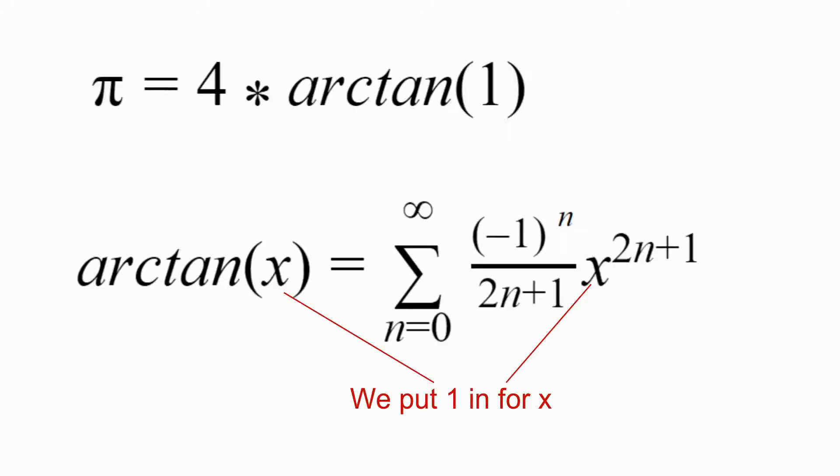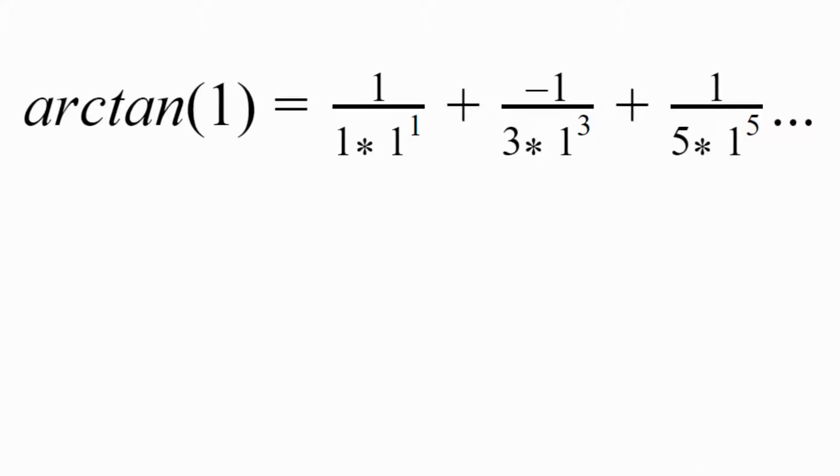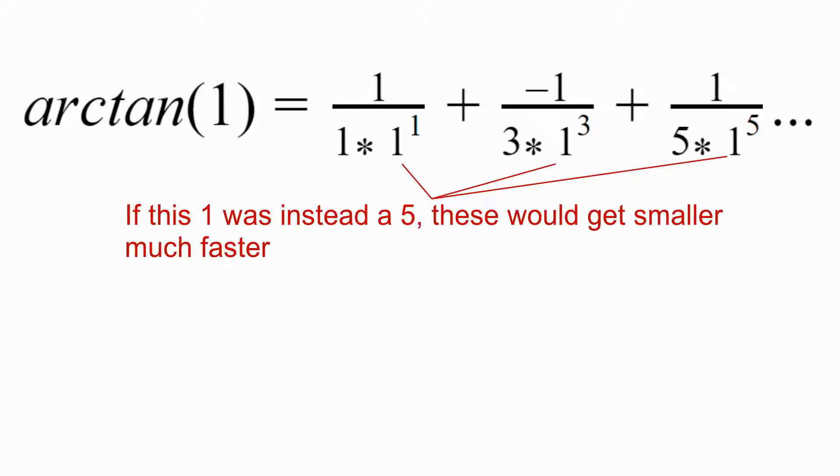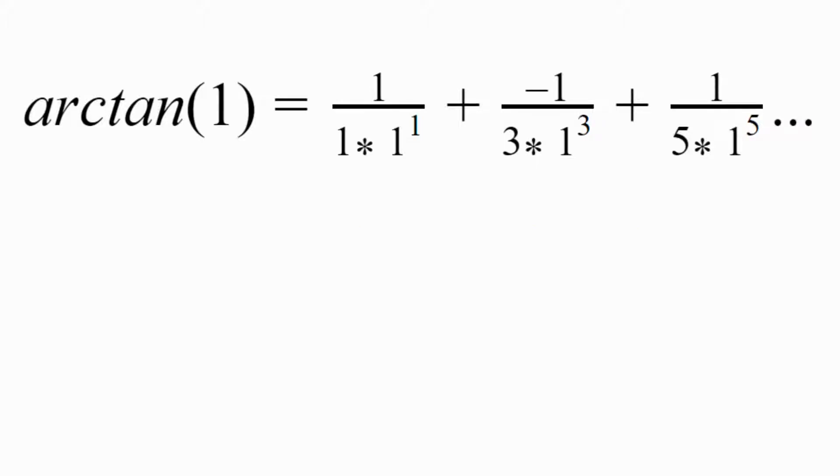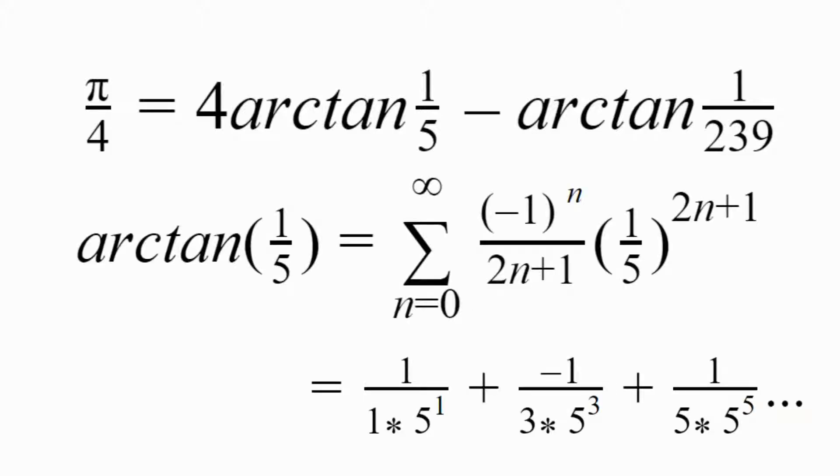We can plug 1 in for our arctangent equation to find pi. I mean, we could do that, and the equation is technically correct but is also complete and utter garbage. The reason this equation is garbage is that it converges to pi extremely slowly. We need to start with a number smaller than 1 to take advantage of the exponent term in the arctangent equation and converge to pi much faster. This is the equation that John Macken developed in 1706. It converges much faster because he found the arctangent of 1 fifth so that every subsequent term is 25 times smaller than the previous term.